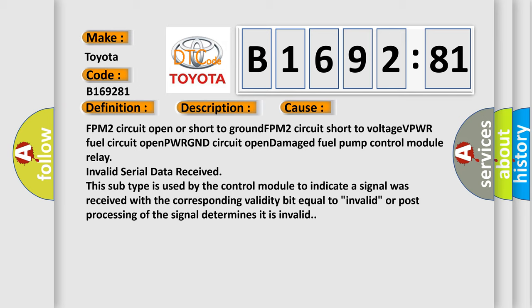This diagnostic error occurs most often in these cases: FPM2 circuit open or short to ground, FPM2 circuit short to voltage, VPWR fuel circuit open, PWR GND circuit open, damaged fuel pump control module relay, or invalid serial data received. This subtype is used by the control module to indicate a signal was received with the corresponding validity bit equal to invalid, or post-processing of the signal determines it is invalid.